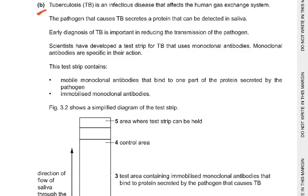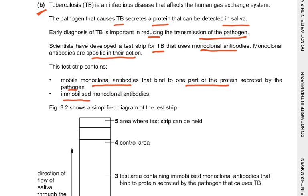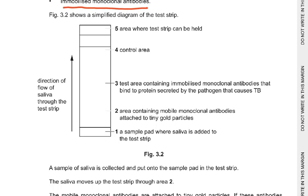Part B: Tuberculosis is an infectious disease affecting the human gas exchange system. The pathogen secretes a protein detectable in saliva. Scientists have developed a test strip using monoclonal antibodies. The strip contains: mobile monoclonal antibodies bound to tiny gold particles, and immobilized monoclonal antibodies in a test area that bind to the protein secreted by the TB pathogen, plus a control area.